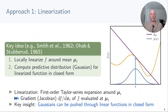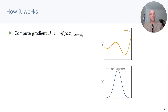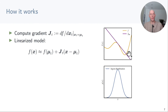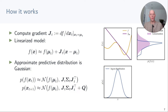Here's how it works. First we compute the gradient of the function with respect to x and evaluate it at the mean of the input distribution. We then get this linearized approximation, shown on the right as a purple line. From here we can use the rules for affine transformations of Gaussian random variables to get this approximate distribution of the next state. In this final step we also add the noise covariance matrix.